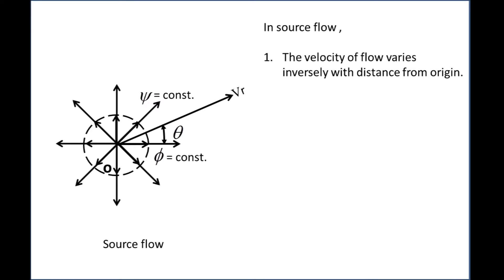In source flow, the velocity of flow varies inversely with distance from origin.